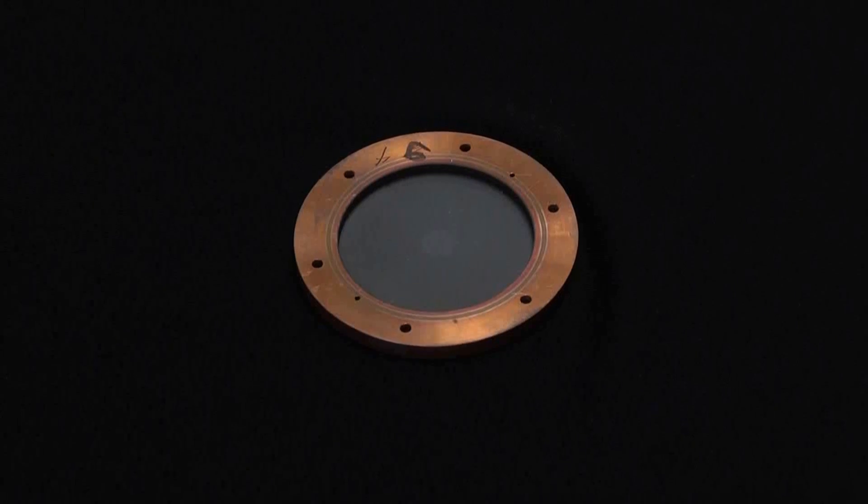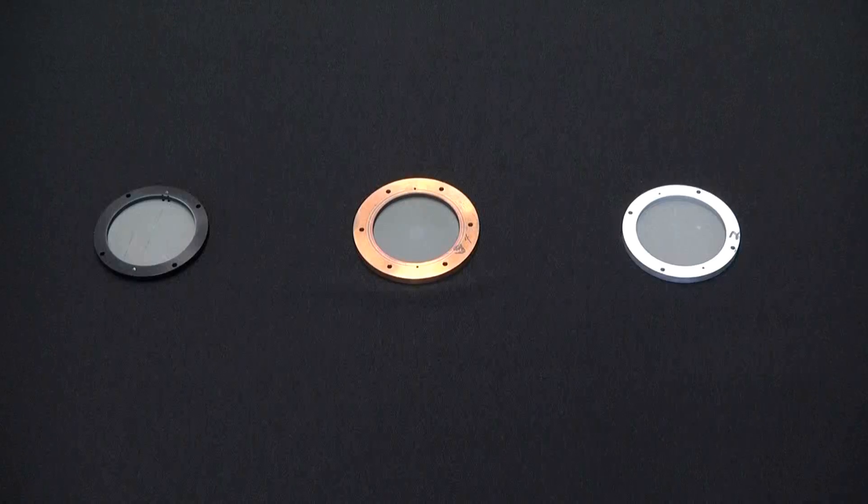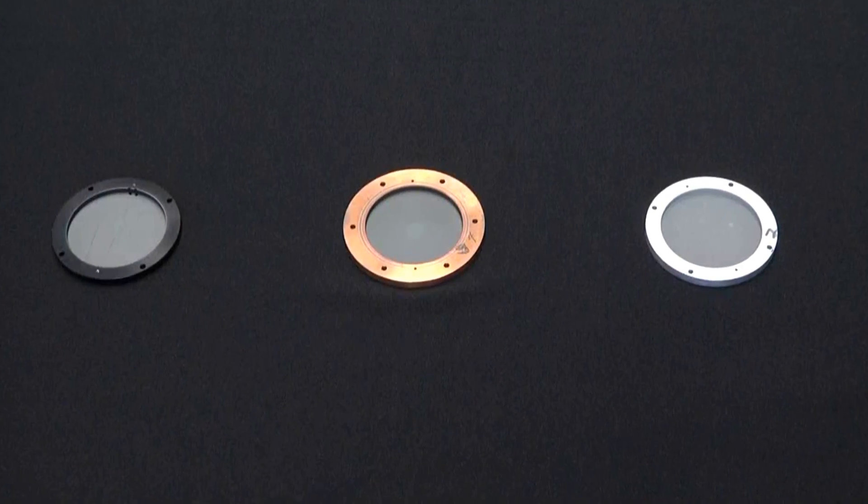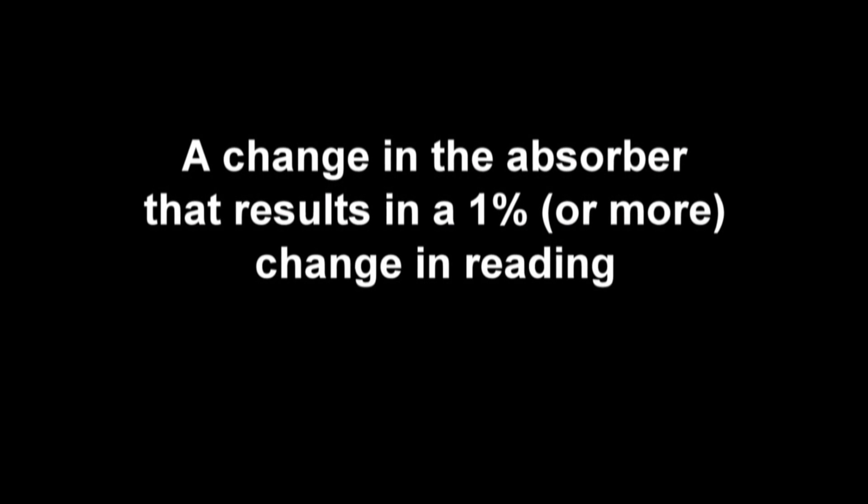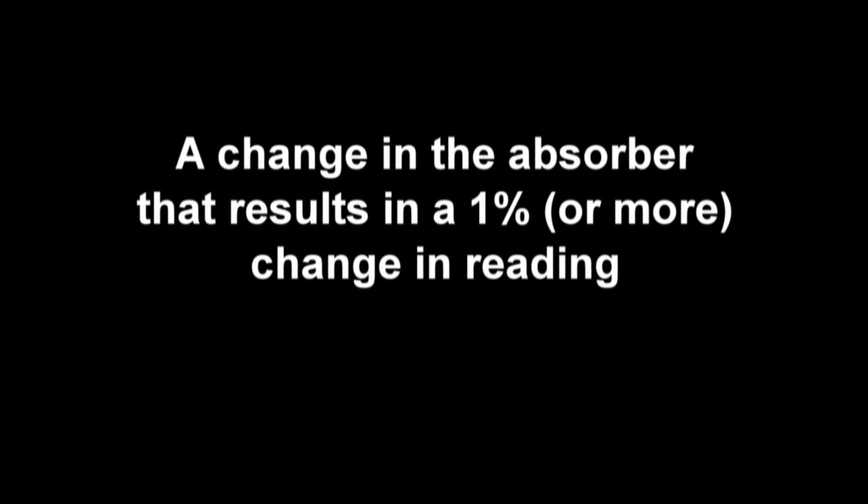Here we can see an even subtler example. How do we decide if these cases are damaged or not? We generally define damage as a change in the absorber that results in a 1% or more change in reading.